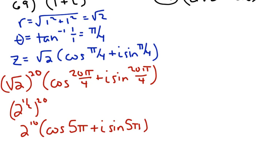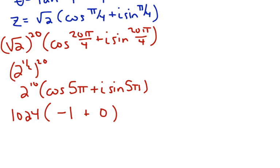2 to the 10th power is 1024. The cosine of 5 pi is negative 1, and the sine of 5 pi is 0, so that i term goes away. So the final answer is just negative 1024.